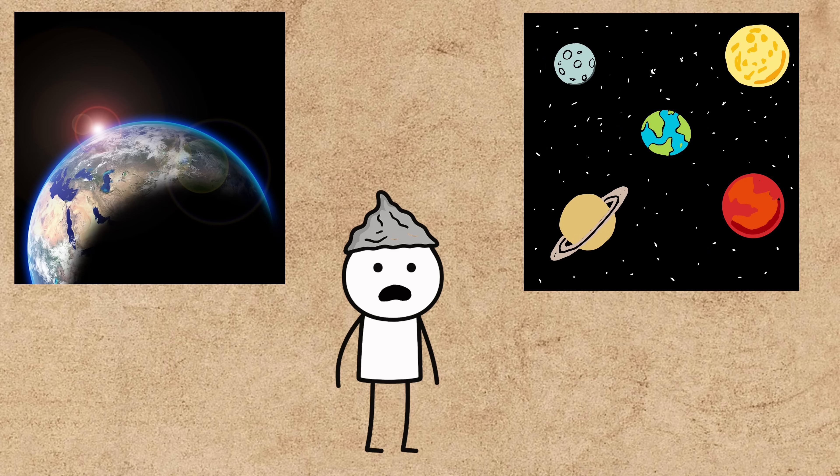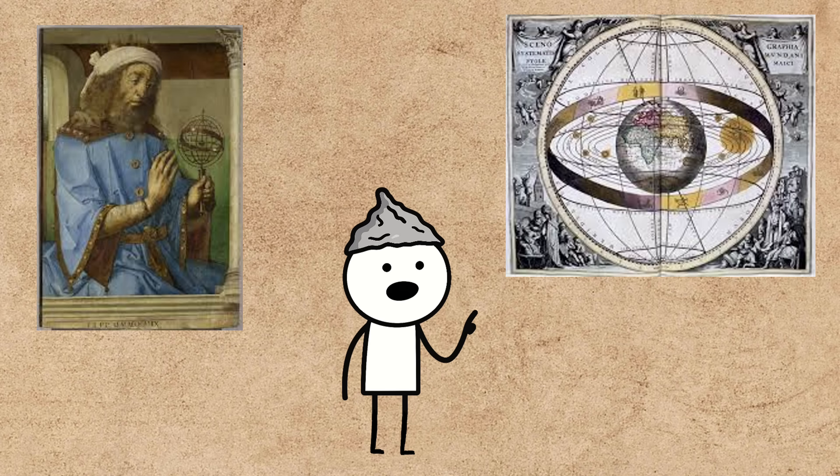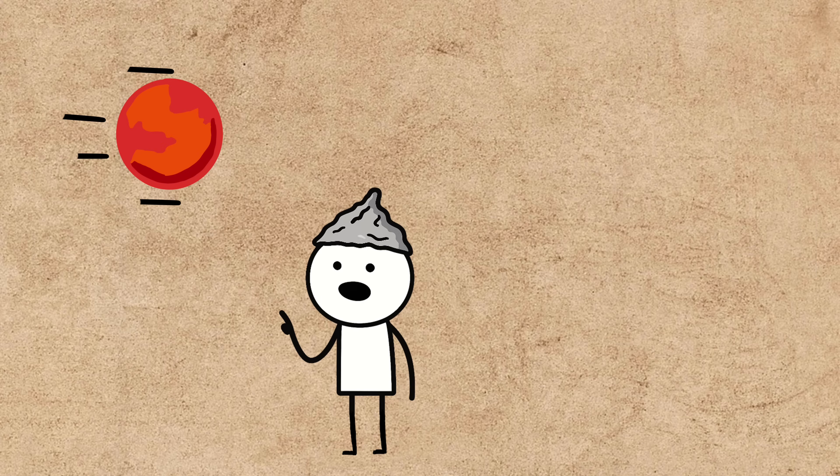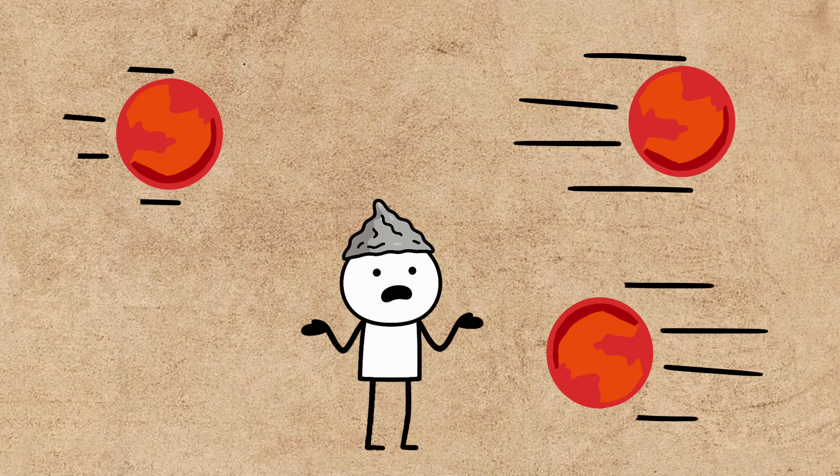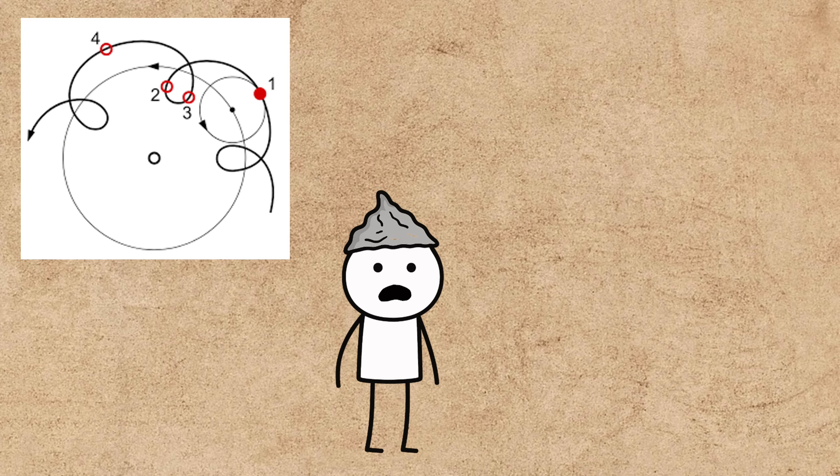This model was most famously refined by the astronomer Ptolemy around 150 CE. His Ptolemaic system was incredibly complex for its time. It had to be, because planets don't move in perfect circles. They sometimes look like they're slowing down, speeding up, or even moving backward, a phenomenon called retrograde motion. To account for this, Ptolemy's model had the planets moving in tiny circles, called epicycles, which in turn moved along bigger circles around the Earth.